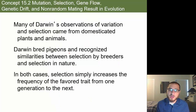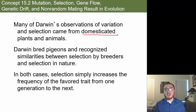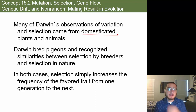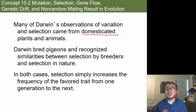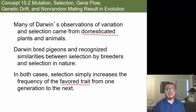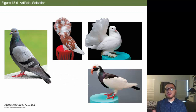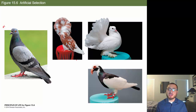Many of Darwin's observations of variation and selection came from domesticated plants and animals through artificial selection, since he couldn't do the kinds of experiments we can do today or go back in time. Darwin bred pigeons and recognized the similarities between selection by breeders and selection in nature. In both cases, selection simply increases the frequency of the favored trait — whether nature or a breeder is doing the favoring.